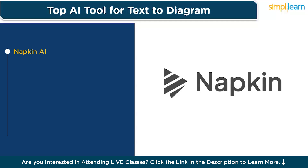The platform also offers customization options, allowing you to adjust colors, shapes, and layout to fit your needs. It's an excellent tool for professionals who want to quickly create diagrams without spending hours manually designing them. With a user-friendly interface and AI-powered accuracy, Napkin AI is a great choice for streamlining the design process. Pricing: there's a free version with basic features; advanced tools like unlimited diagram generation and extra templates start at $10 per month.